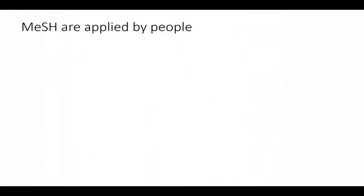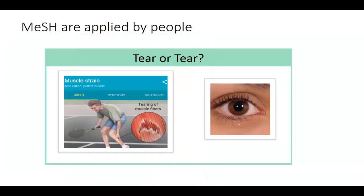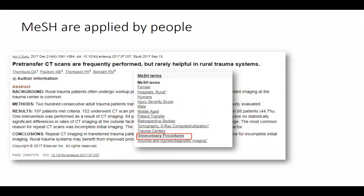MeSH terms are applied by subject specialists — people who scan the articles to determine the best subject headings to apply. We rely on librarians and subject specialists to apply MeSH terms because of the subtleties of language. For instance, a software program may not be able to tell the difference between a tear (the rip) or a tear (from crying). Also, it may be tricky for a software program to understand the abstract theme of an article. Because MeSH terms are applied by people, there's a bit of a lag between when an article shows up in PubMed and when the MeSH terms are applied.